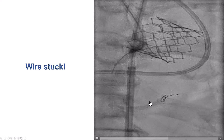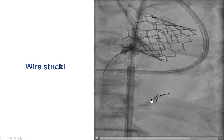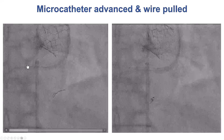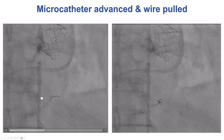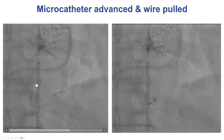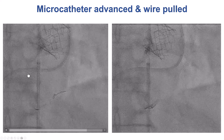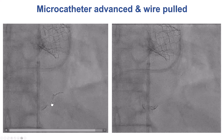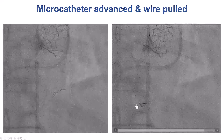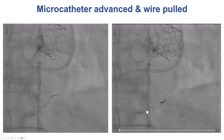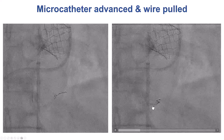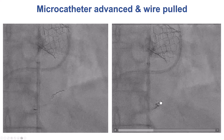When you have an entrapped guide wire, the next step is to get something close to it so that the entrapment can be released. We advanced the microcatheter, which now crossed through the mid RCA all the way distally, and then we pulled. However, what happened is the wire came back, but the tip of the wire remained inside the vessel.